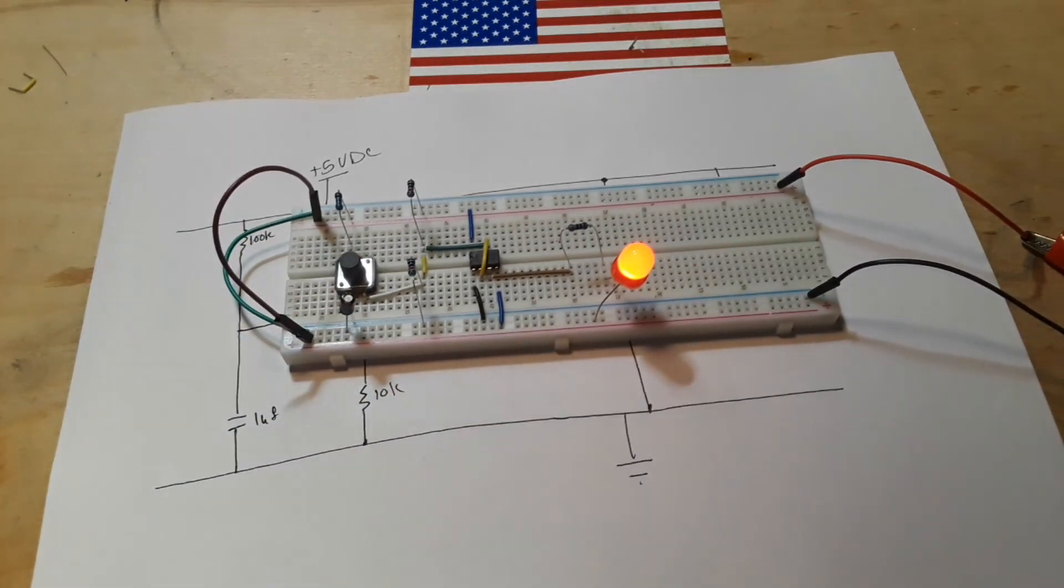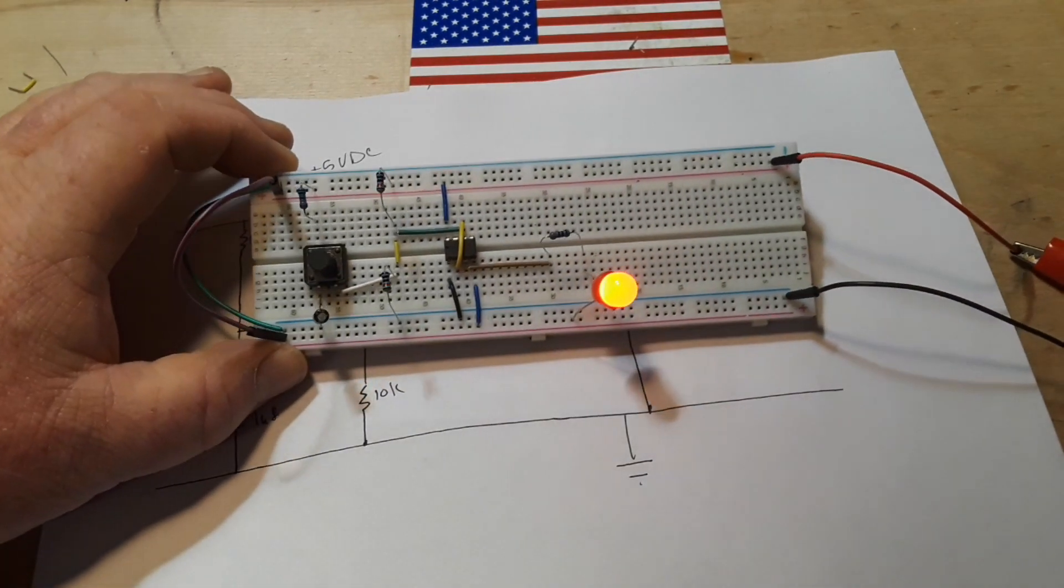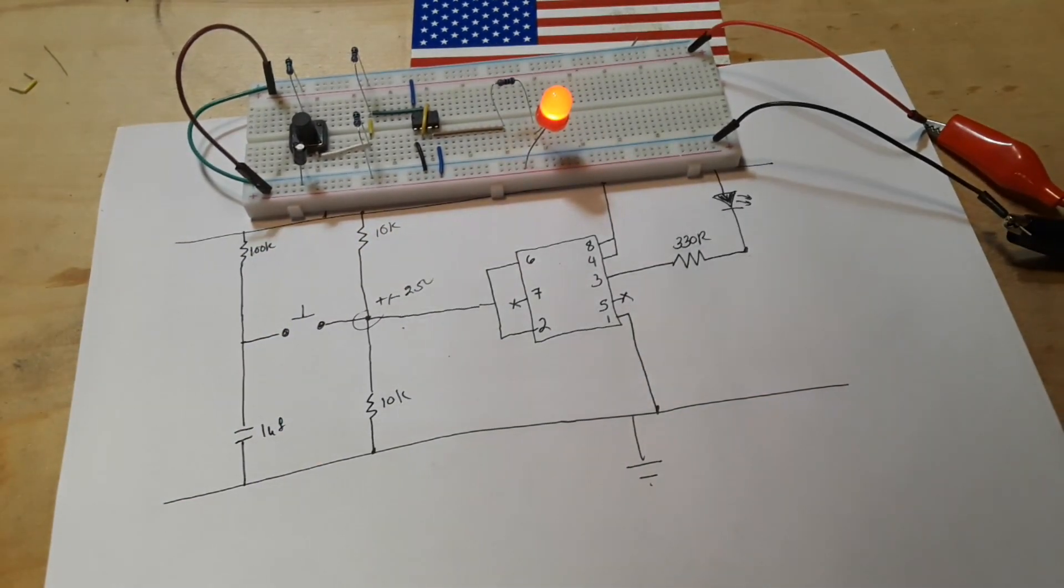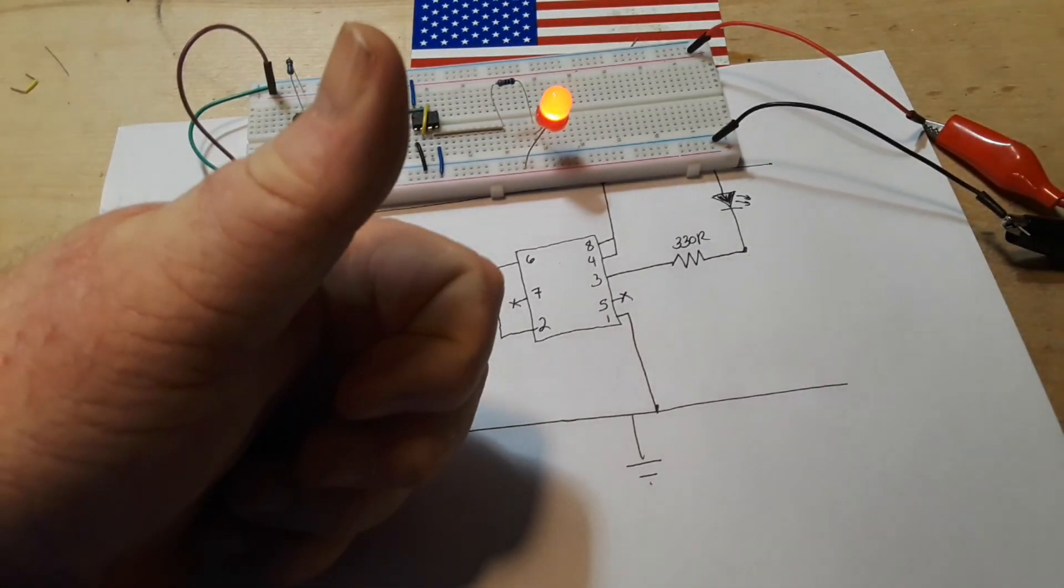The reason you got a little delay there is that capacitor charging and discharging. So, 1 microfarad - it's a little juicy capacitor. Alright guys, that's it. A classic circuit that you should know, and I hope you enjoyed it.